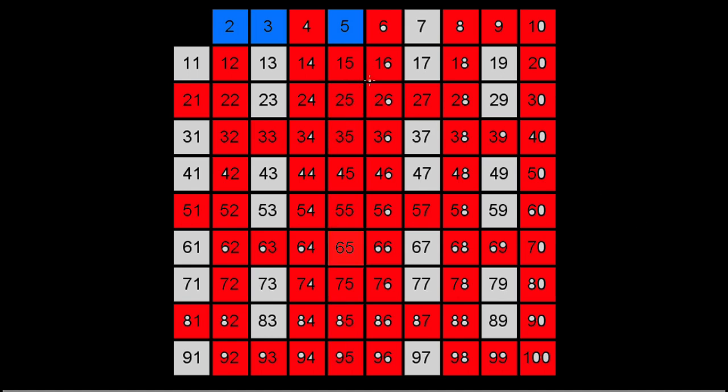We proceed forward until we hit 7. We know 7 is prime because it's unmarked. 7 times 7 is 49. We mark 49 and all multiples of 7 above it as composite.